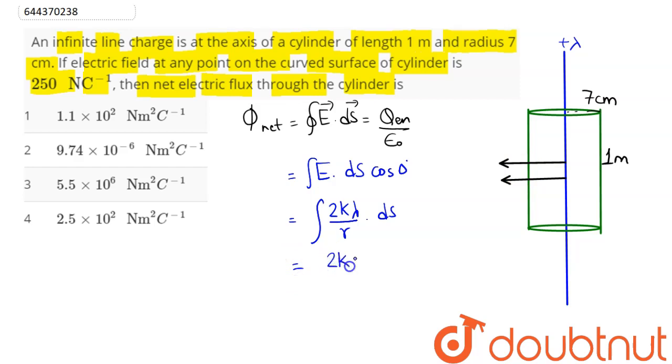Here we can say this comes outside as this is constant. So, 2k lambda by r into curved surface area of the cylinder is 2 pi r into l.